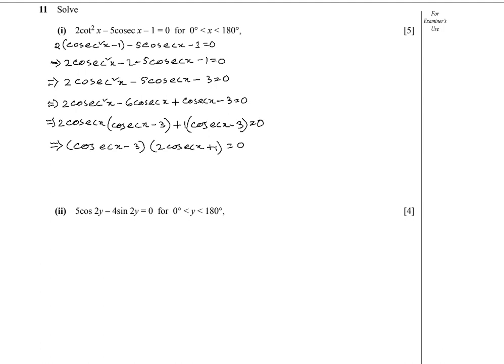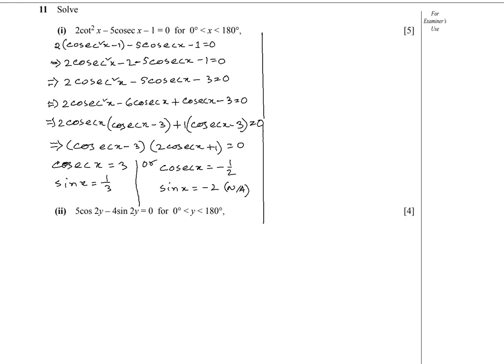From the two factors: cscx = 3 means sin x = 1/3, since sin x = 1/cscx. From 2cscx + 1 = 0, cscx = -1/2, so sin x = -2. This value cannot be accepted since the minimum value of sin x is -1, and -2 is less than -1. So we take sin x = 1/3 only.